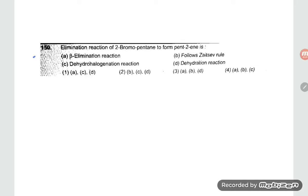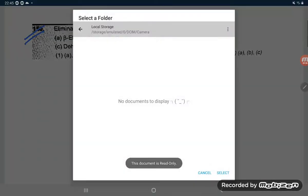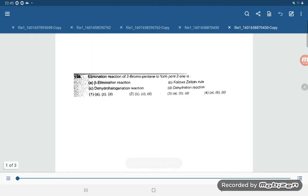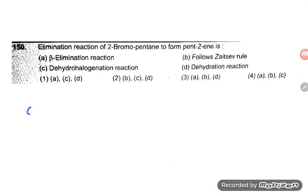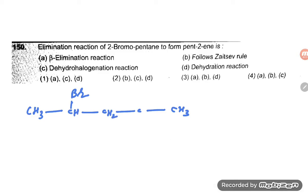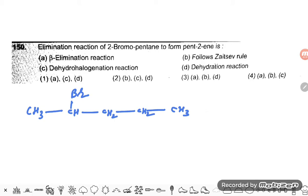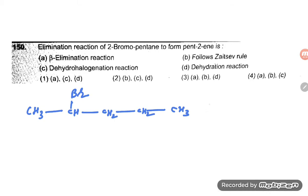Hello students, let us see question 150. This is a good question about the elimination reaction of 2-bromopentane. In 2-bromopentane, looking at the structure: meth, eth, prop, but, pent — on the second position, bromine (Br) is present. Complete the valency at other positions. So it is 2-bromopentane, and the reaction is elimination.